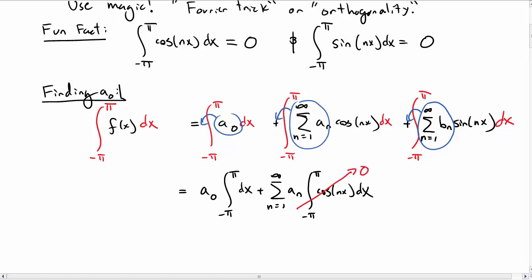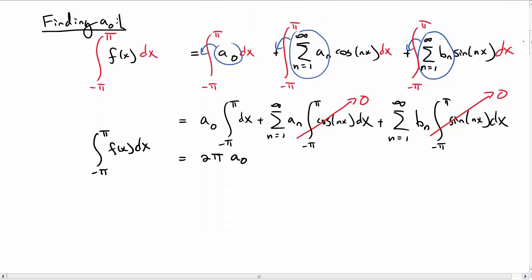Oh, wait, we know that that's equal to zero from our fun fact before. And then a sum over b sub n times the integral of sine of nx dx. Oh, we also know that that is zero. So the right-hand side simplifies considerably. We just have to do this integral, which gives us 2π. And so now we know that the integral of f(x) dx is equal to 2π a₀. Or, flipping this around, we know that a₀ is 1 over 2π, the integral from negative π to π, f(x) dx. So if I give you an f(x), you can compute a₀ now.